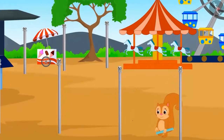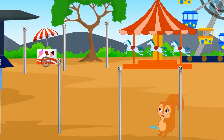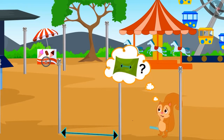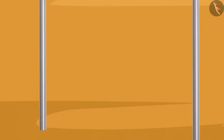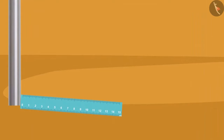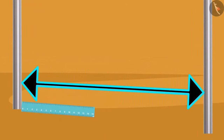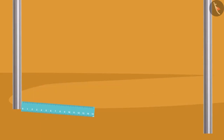Poles were erected at the places where curtains were to be hung. Chanda thought that if she measures the distance between the poles, she will get the size of the curtain. She began to measure the distance between the poles with her ruler. But Chanda's ruler is very small, and she is unable to measure the distance between the poles with it.